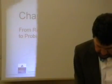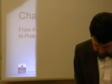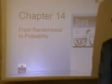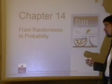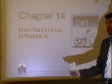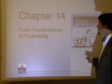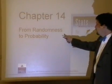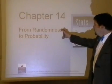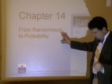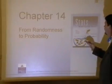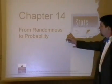We are now looking at Chapter 14, 'From Randomness to Probability.' It comes after chapters on sampling and randomness, and the connection makes sense because probability is based off of random events.